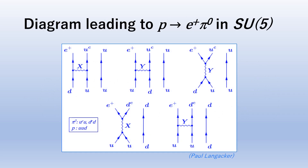The fact that the diagrams of the process — proton decays into a positron and a neutral pion — are easy to draw means that, if the proton actually decays, those diagrams are most likely the dominant processes. This is one of the conspicuous characteristics of the SU(5) GUT.